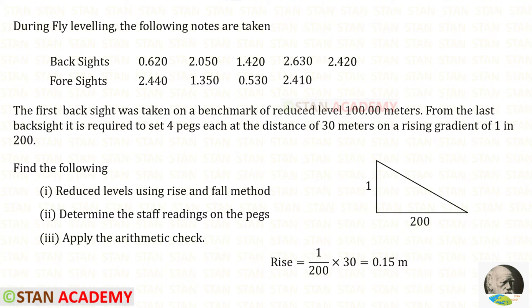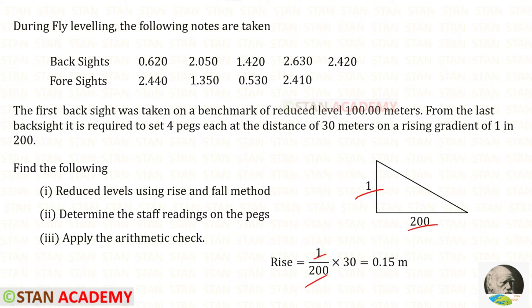Let us see how to find the rise between the consecutive readings. The gradient is 1 in 200, meaning 1 vertical for 200 horizontal. For a distance of 30 meters, we calculate the rise, giving us a rise between two consecutive readings of 0.15 meters.